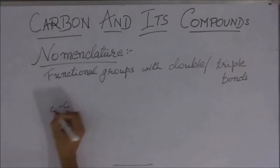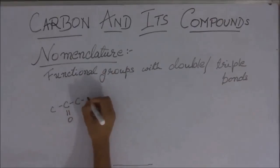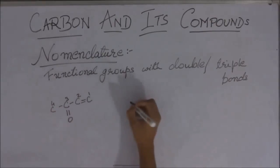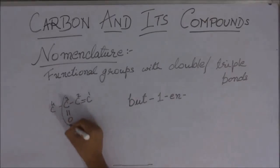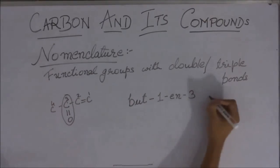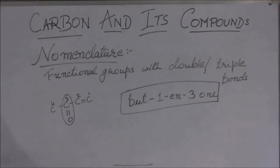So, suppose take some ketonic group, there is a double bond. So, you start numbering from here, 1, 2, 3, 4, 4 carbons. So, bute, then, there is a double bond at 1. So, bute-1-ene, there is a ketonic group at 3. So, 3-one. This is the name of the compound. Bute-1-en-3-one.